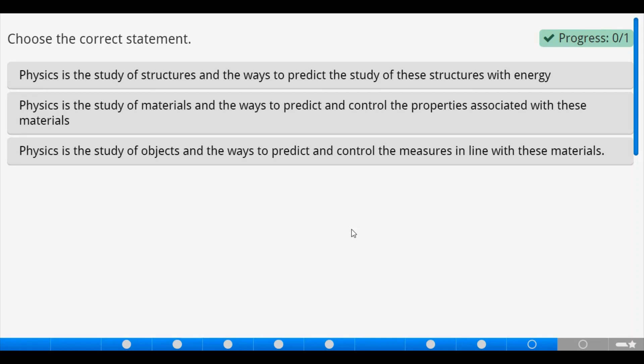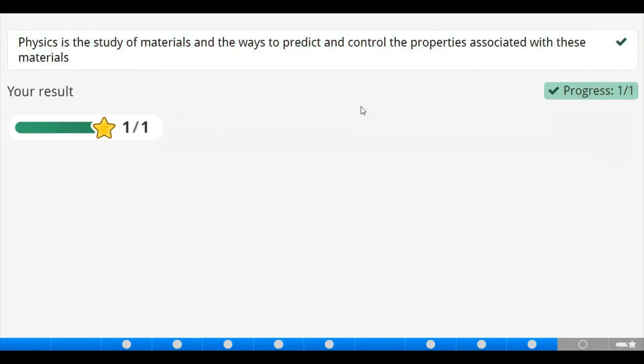Let's go through it. Physics is the study of objects and the ways to predict and control the measures in line with these materials. This is wrong. We have two statements contradicting one another. Object and materials. So, the statement is false. The second statement will be correct. So, let's confirm that is correct.